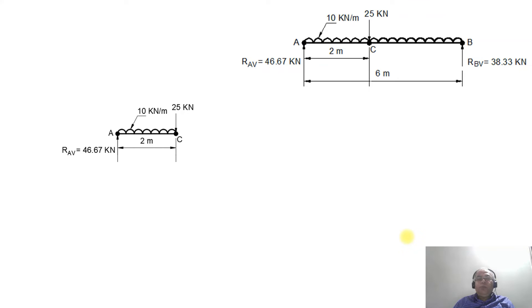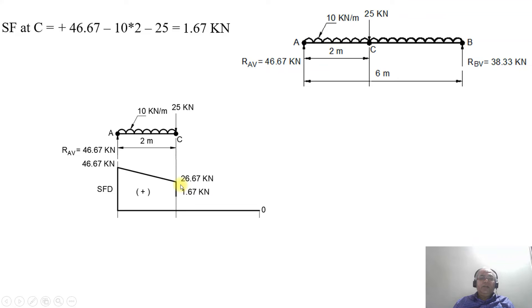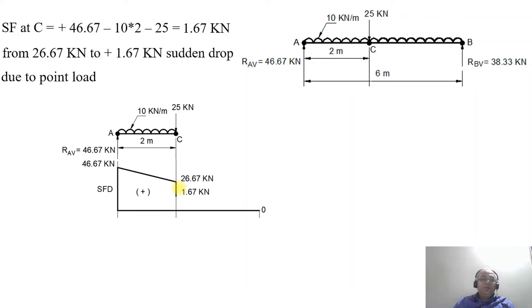Now considering the point load at C: SF at C = 46.67 − (10 × 2) − 25 = +1.67 kN. So from 26.67 kN before the point load, the shear force drops suddenly by 25 kN due to the downward point load at C, falling to 1.67 kN. It is still on the positive side, representing a sudden drop from 26.67 kN to 1.67 kN.